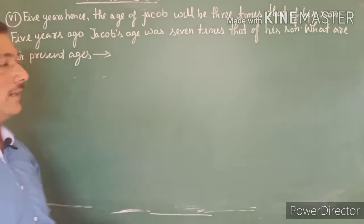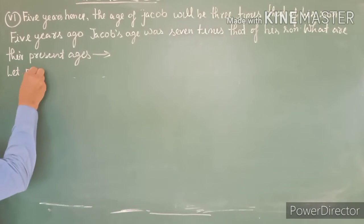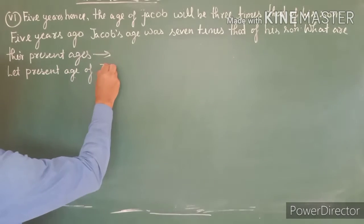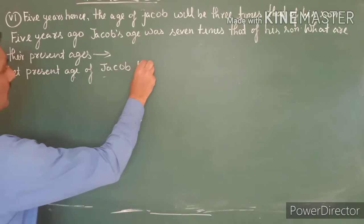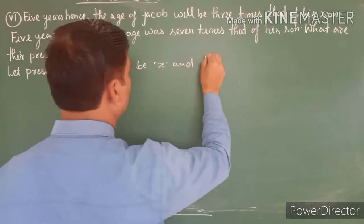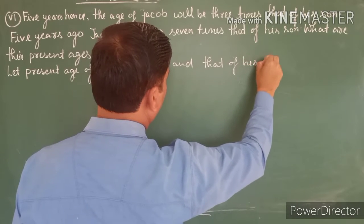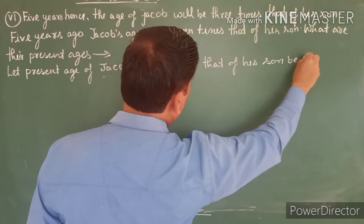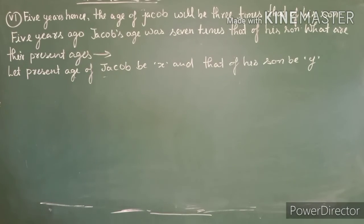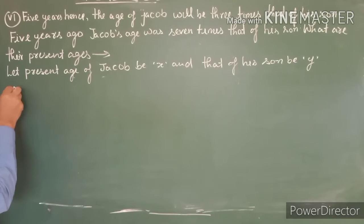Let the present age of Jacob be x, and that of his son be y. So we have considered y as the son's present age and x as Jacob's age. According to the first condition: